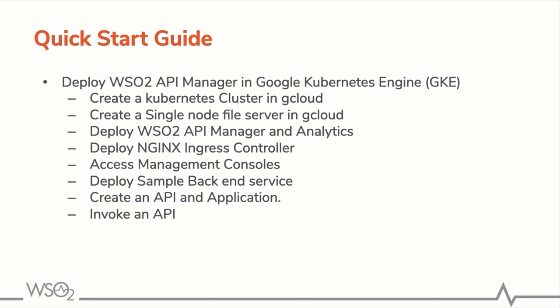This will be the outline for the demo. First, we're going to create a Kubernetes cluster and a single file node server in GCloud. After that, we're going to deploy WSO2 API Manager and analytics. After that, we're going to deploy NGINX ingress controllers. Then we're going to access the management consoles such as the store and the publisher. Finally, we're going to deploy a sample backend service, create an API and application, and at the end I'll show you how to invoke an API.